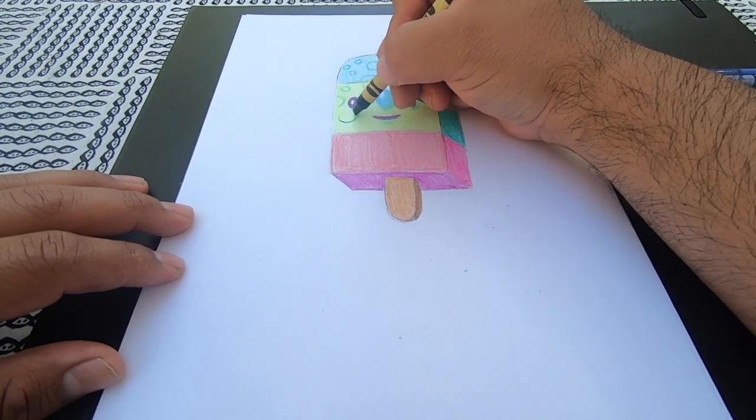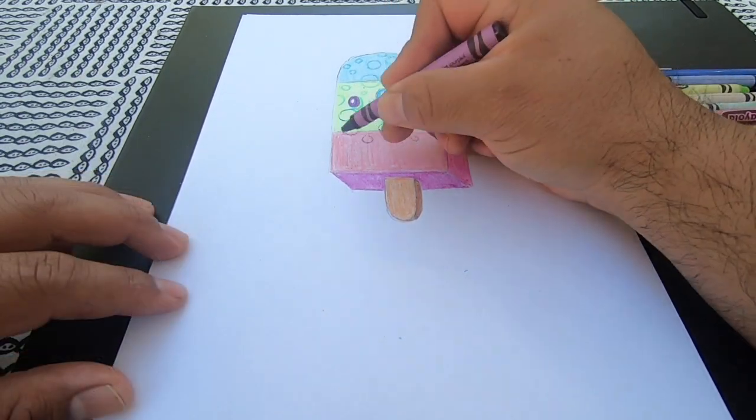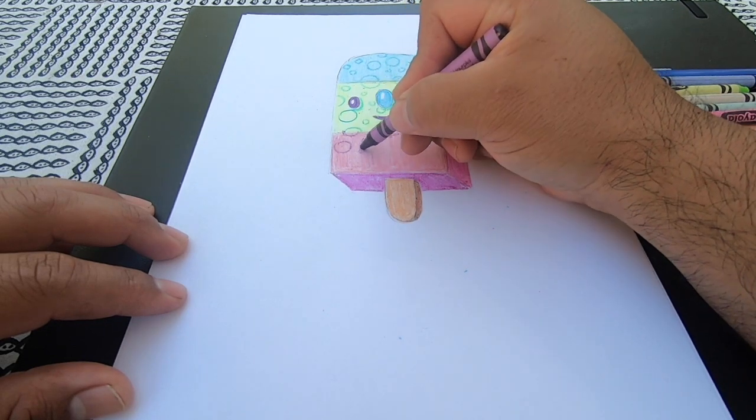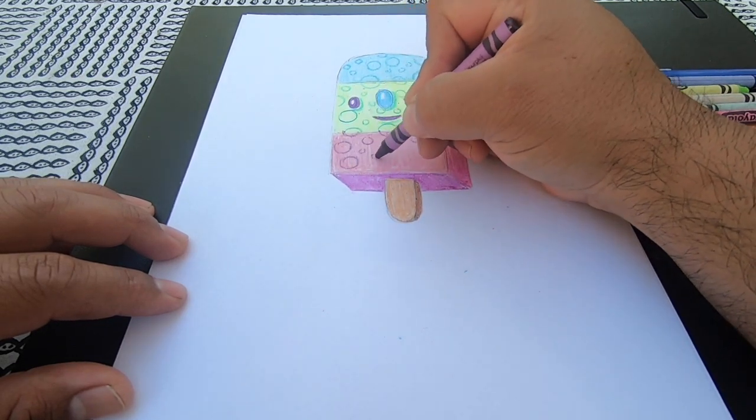After adding some dark tones to the drawing I go back and add some circles to give the popsicle drawing a sense of pattern and make it a little bit more dynamic.